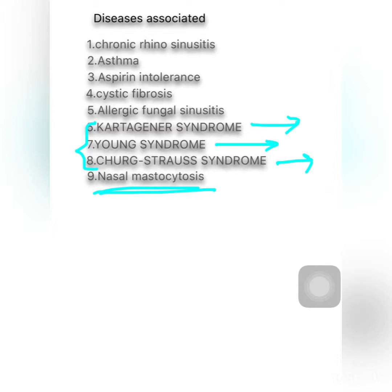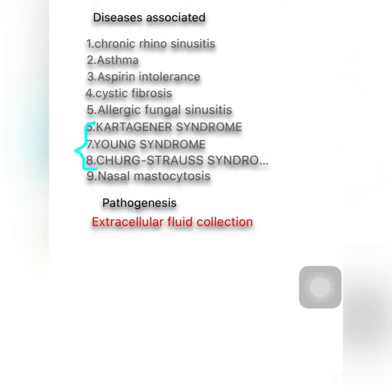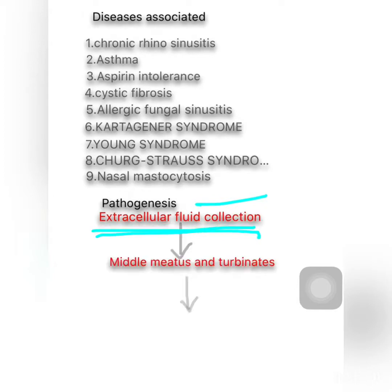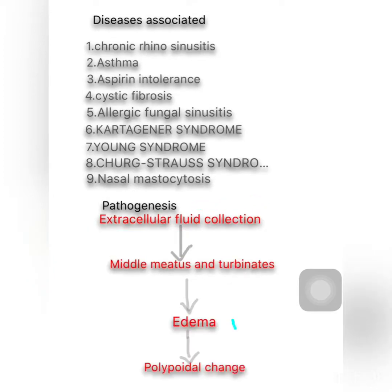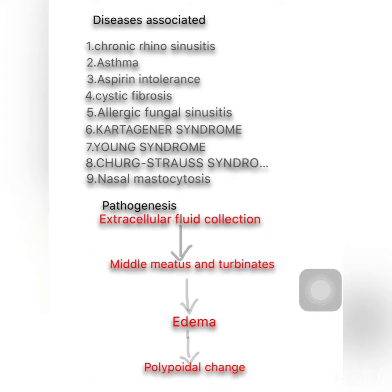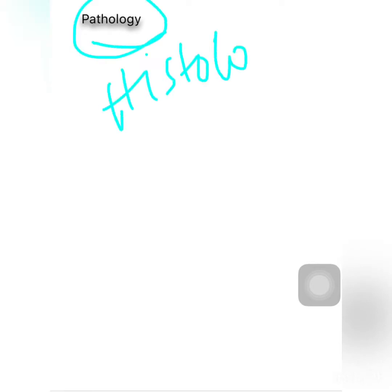Regarding the pathogenesis of ethmoidal polyp: extracellular fluid collection occurs in the nasal mucosa, particularly in the region of the medial meatus and turbinate, forming edema. This leads to polypoid changes. The polyp is sessile in the beginning and then becomes pedunculated due to gravity and excessive sneezing.